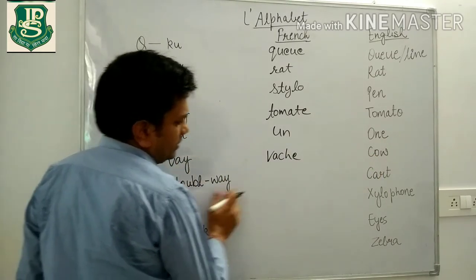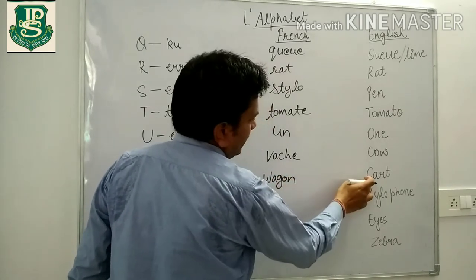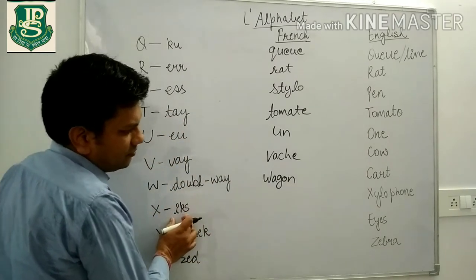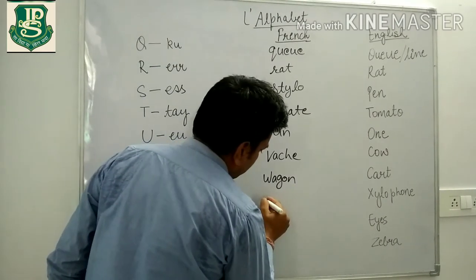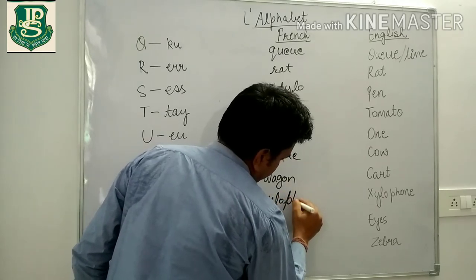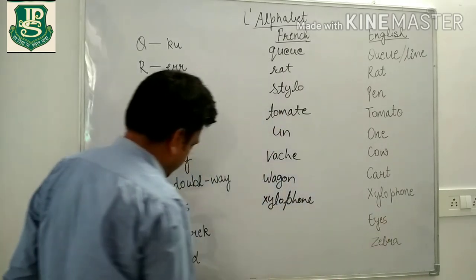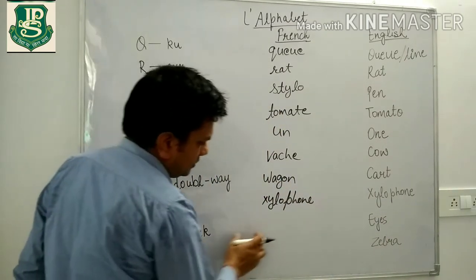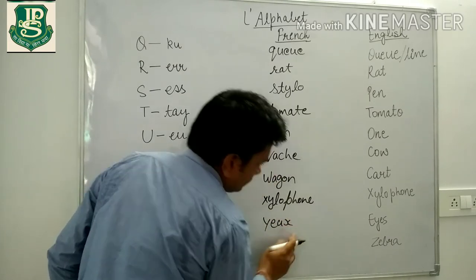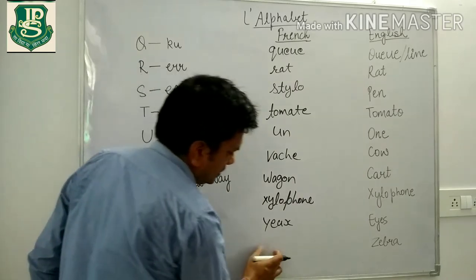W means wagon meaning cart. X means xylophone. Y means yeux meaning ice and Z means zebra.